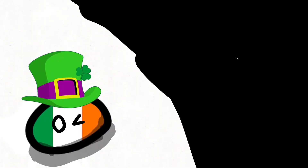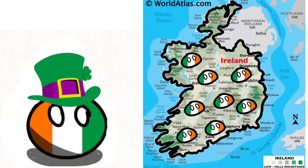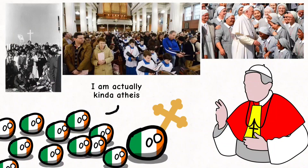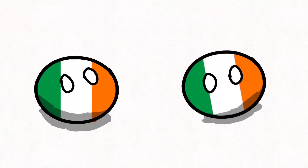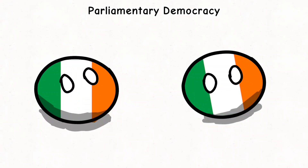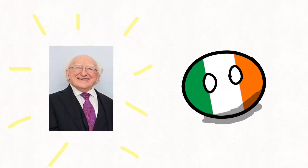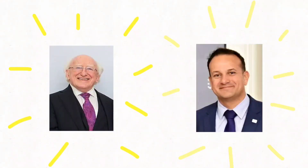The Republic of Ireland, also known as Ireland, is an independent country located in the northern part of the island, mainly Catholics, with the capital city Dublin. The Republic of Ireland is a parliamentary democracy with a president as the head of state and a prime minister as the head of government.